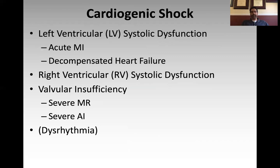When we break down cardiogenic shock — LV dysfunction, RV dysfunction, severe valve insufficiency, and dysrhythmias — ultrasound can directly and quickly assess these things. Arrhythmias are on the list, though you're not diagnosing most arrhythmias by ultrasound. However, in cardiac arrest when trying to assess for ROSC, ultrasonography is increasingly shown to be a useful adjunct and driver of assessment. So when looking at the heart, you're asking: is this shock due to LV dysfunction, RV dysfunction, valve insufficiency, or a dysrhythmia contributing to the shock state?